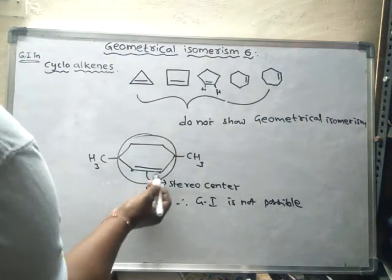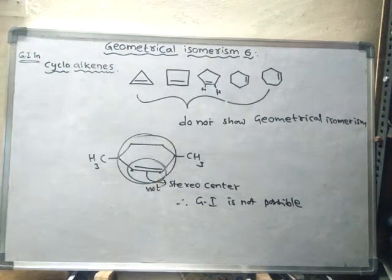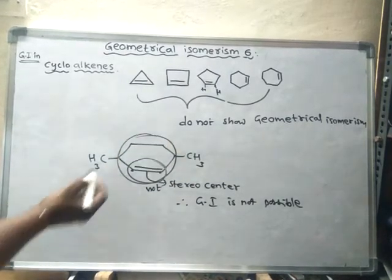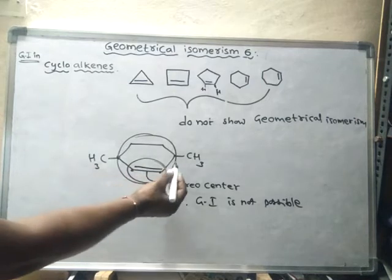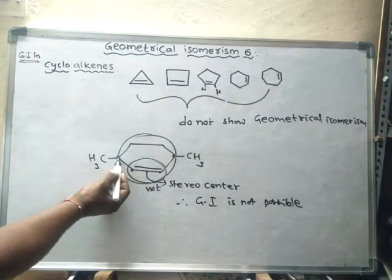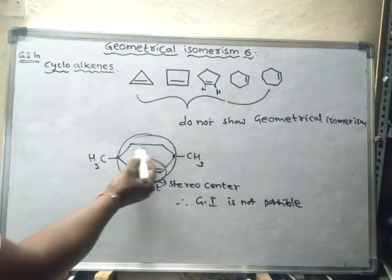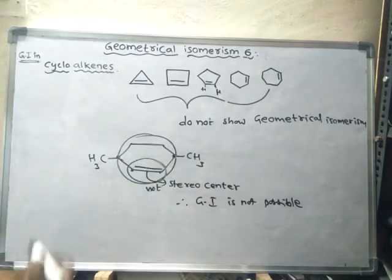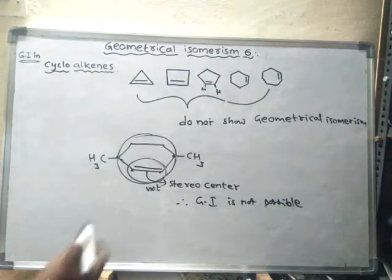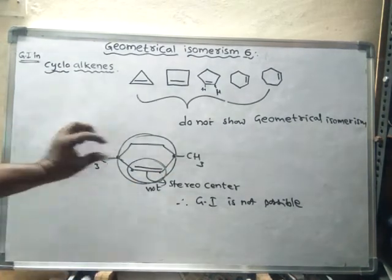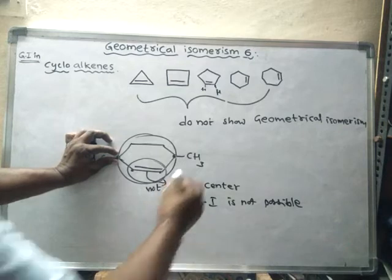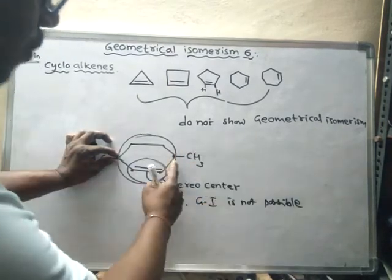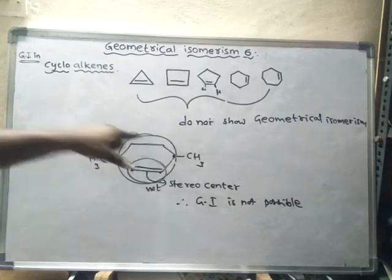Now looking at the cycloalkane part of the same compound: the carbons involved in the cycloalkane ring are sp3, and these two carbons are under restricted rotation. If you hold one carbon and try to rotate the other, you cannot, because of the restricted rotation between them.